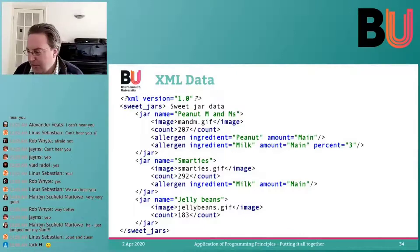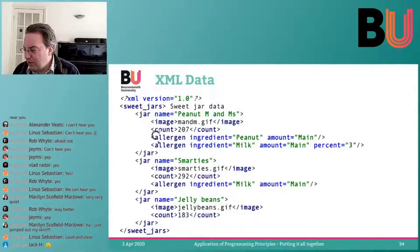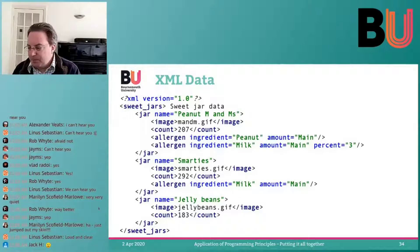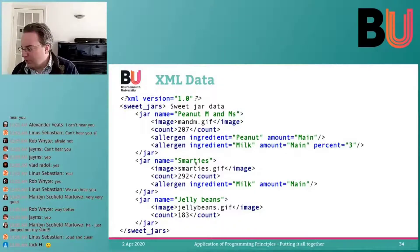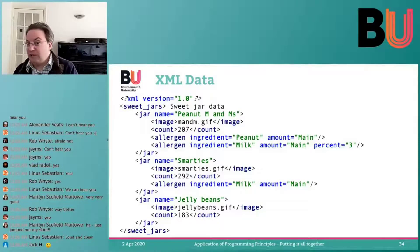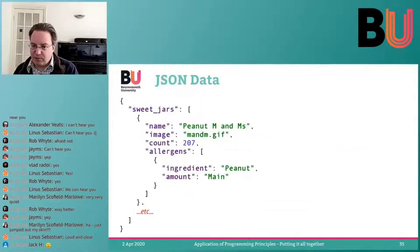In XML we have tags everywhere — open and close — so it can get a little verbose in that sense. But it has certain properties that make it easy to handle, having all those tags. And this is what JSON would look like.